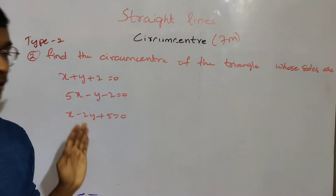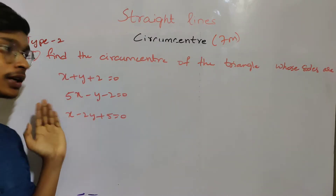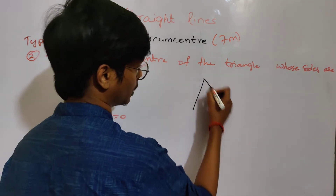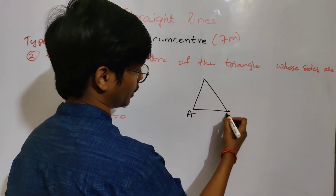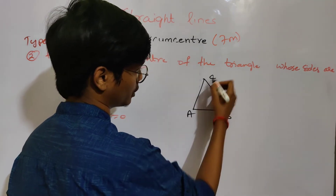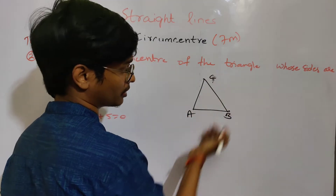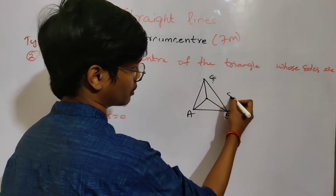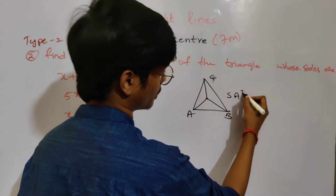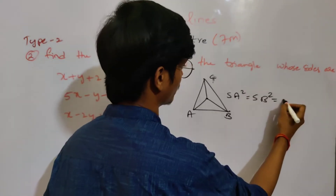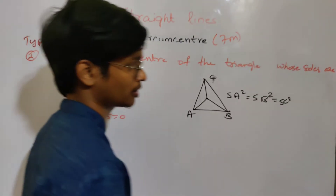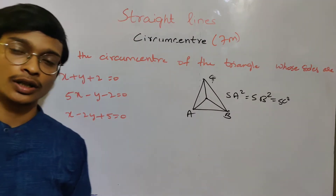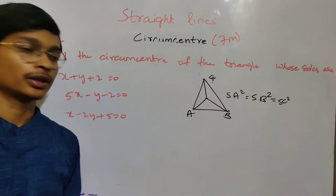We are doing a Klein equation. We are doing a triangle A, B, C. First, we are doing an ABC point. We are doing a different condition: SA squared equals to SC squared. We are doing a circumference in a different way.